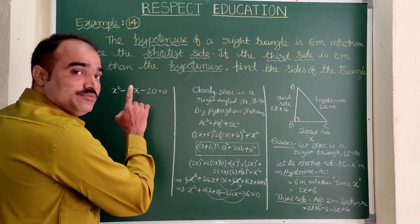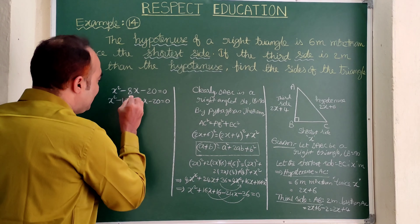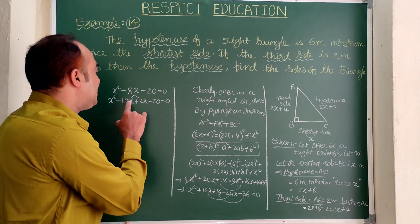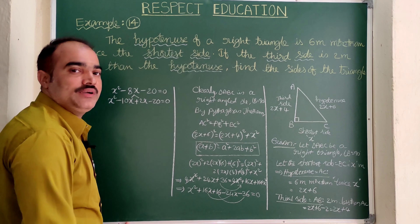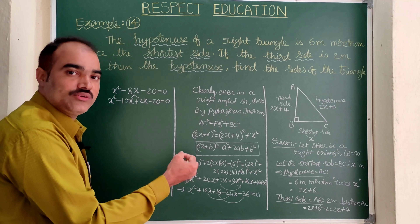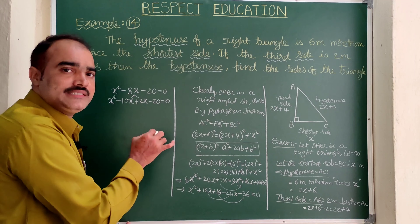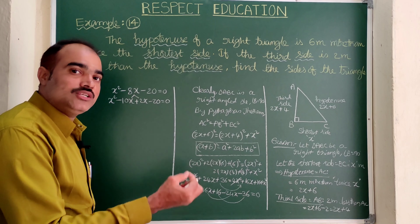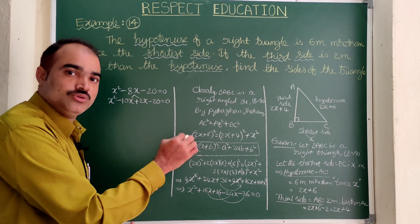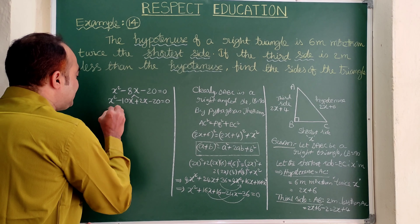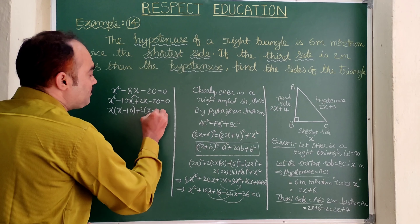Now let us split the middle term. We need factors of 20 such that their product is minus 20 and their sum is minus 8. That is minus 10 and plus 2: minus 10 times 2 equals minus 20, and minus 10 plus 2 equals minus 8. So we write: x² minus 10x plus 2x minus 20 equals 0. Those having difficulty finding factors can refer to the previous videos on factoring.